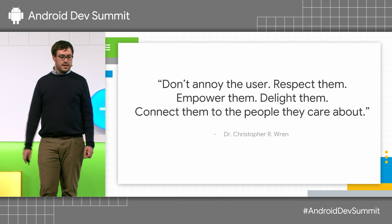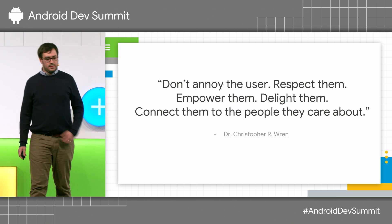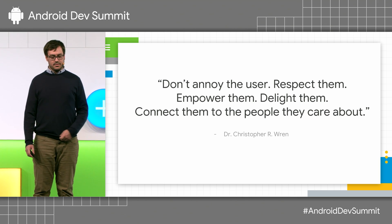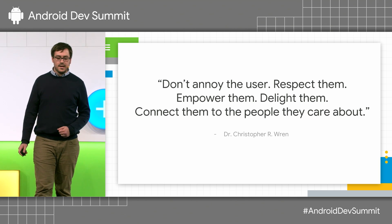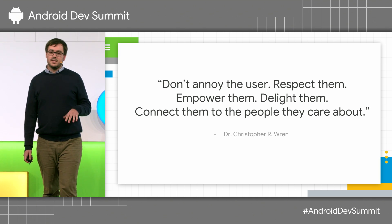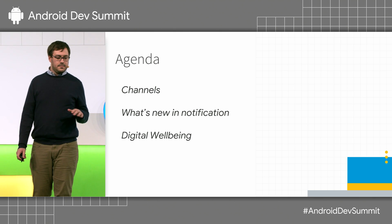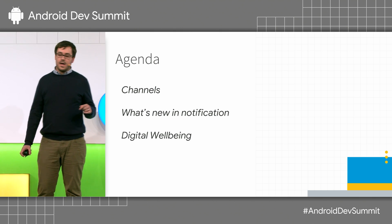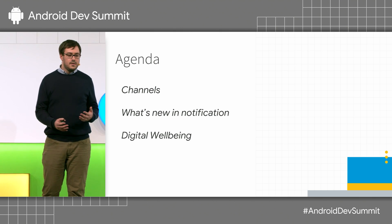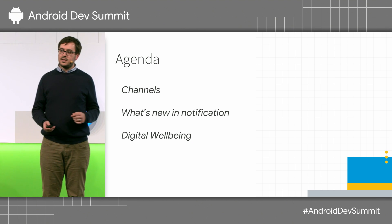Three years ago on this stage, Chris Wren, an Android engineer on the system UI, gave this quote, and it's a brilliant one: 'Don't annoy the user. Respect them, empower them, delight them, connect them to the people they care about.' And this is still very much true today. We'll look at channels and how you can use them in your app, what's new in notifications, and finally, digital well-being.